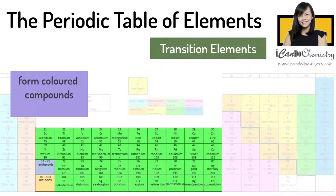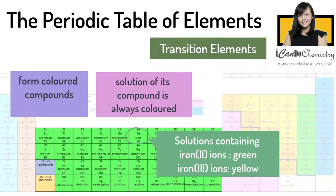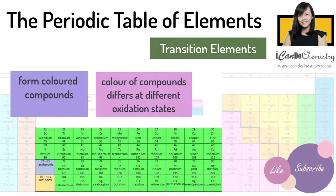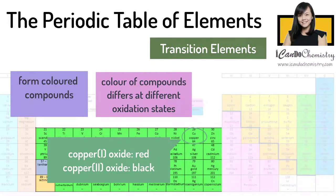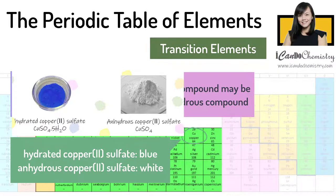Transition elements form colored compounds; a solution of their compounds is always colored. Solutions containing Fe2+ ions and Fe3+ ions are pale green and yellow respectively. The colors of the compounds of a transition metal differ at different oxidation states — copper(I) oxide is red while copper(II) oxide is black. The color of a hydrated compound may also differ from the anhydrous compound; hydrated copper(II) sulfate is blue while the anhydrous form is white.